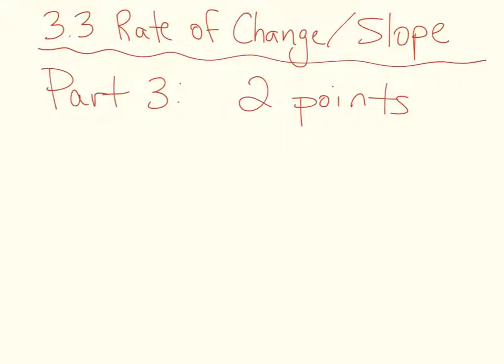All right, so now we're at our third form. We're still doing rate of change or slope, but now this is when they give us two points. There's a couple things you can do with this. If you want to graph it because you're all about graphing those points and then count, that is fine and dandy if that is good for you.